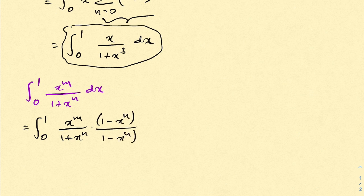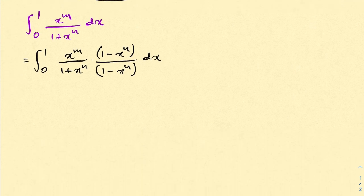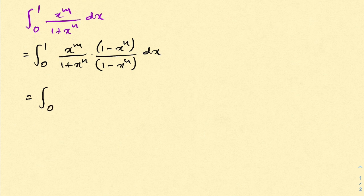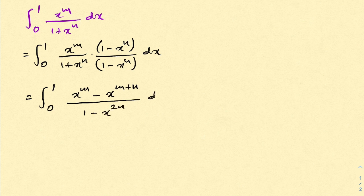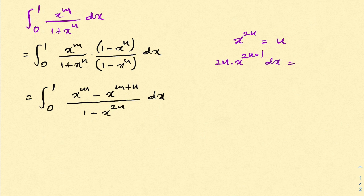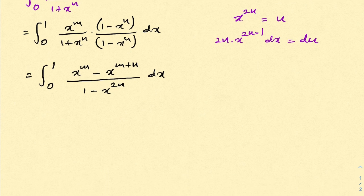After simplification we get the integral from 0 to 1 of x to the m over 1 minus x cubed dx. To evaluate this integral I am going to use the substitution x to the 2n equals u. Differentiating gives 2n times x to the 2n minus 1 dx equals du. The limits remain 0 to 1.